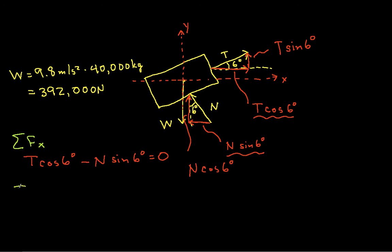Let's do the summation of forces in the y direction. So in the y direction, we have this term, T sine of 6 degrees, plus this term, N cosine 6 degrees, minus the weight, minus this guy, which is 392,000 newtons. And that's equal to 0.